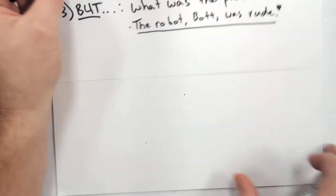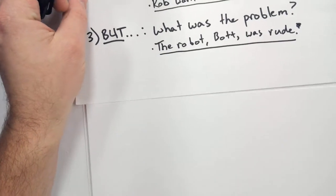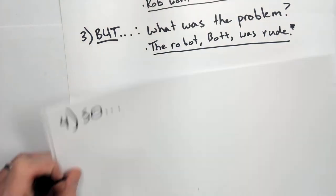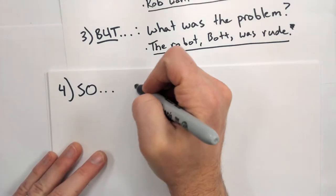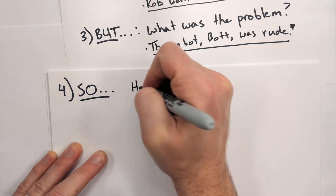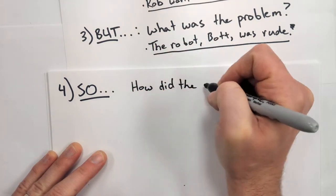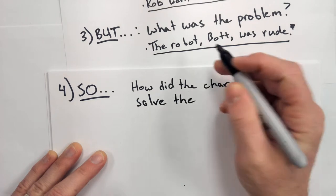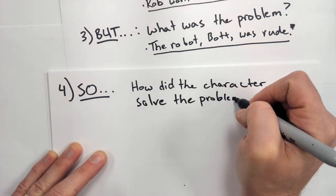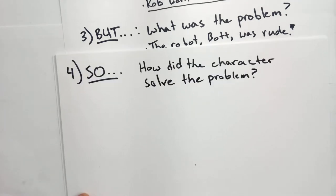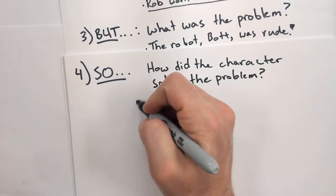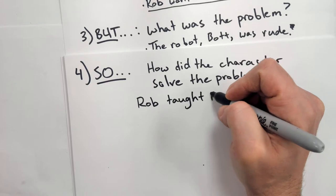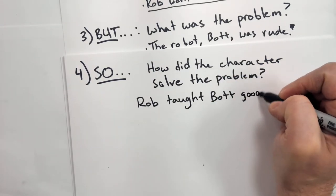So if I'm writing my summary now, I've already begun: Rob wanted a new robot, but the robot, Bot, was rude. Now I go to the next step of my summary. After 'but' we have 'so' — how did the character solve the problem? In this case, I would say that Rob taught Bot good manners.